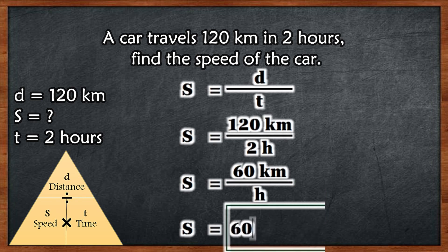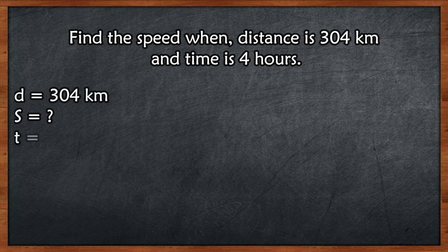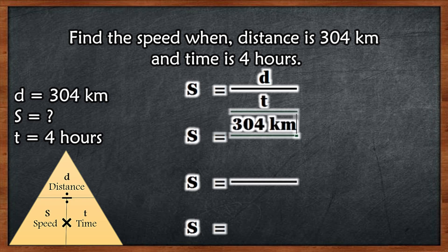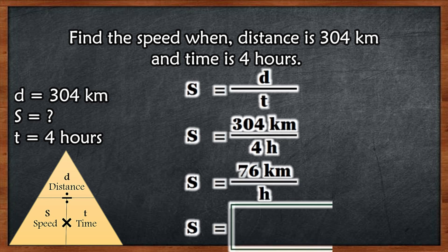Next example: Find the speed when distance is 304 kilometers and time is 4 hours. Distance is equal to 304 kilometers, speed is missing, and time is 4 hours. Speed is equal to distance divided by time: 304 kilometers over 4 hours equals 76 kilometers per hour. So the speed is equal to 76 kilometers per hour.